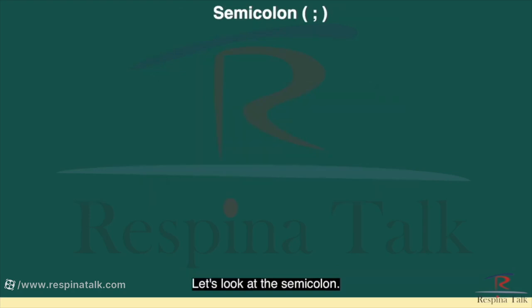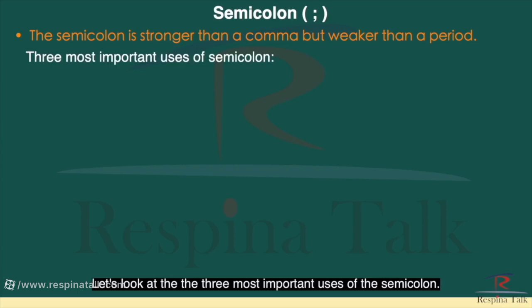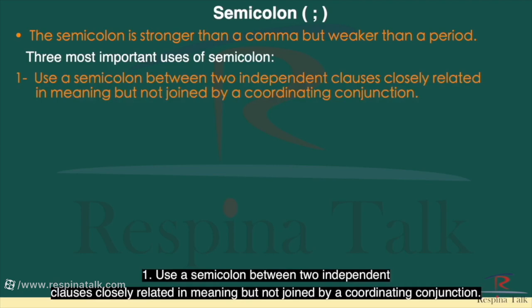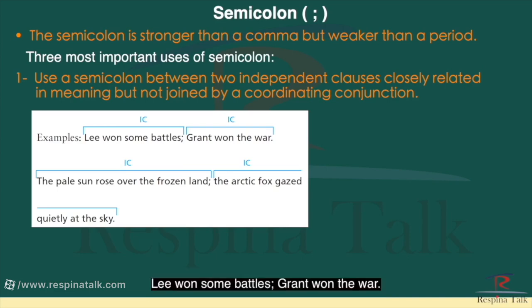Let's look at the semicolon. The semicolon is stronger than a comma but weaker than a period. Let's look at the three most important uses of the semicolon. One: use a semicolon between two independent clauses closely related in meaning but not joined by a coordinating conjunction. Here we have two independent clauses that are closely related with no coordinating conjunction: 'Lee won some battles; Grant won the war.'